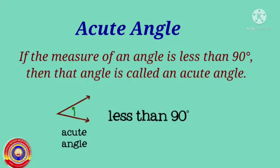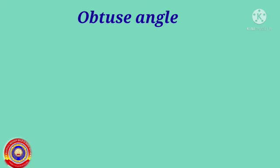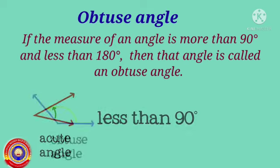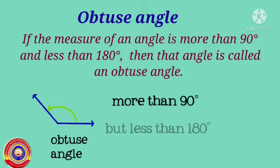Next, acute angle. If the measure of an angle is less than 90 degrees, then that angle is called an acute angle. Next, obtuse angle. If the measure of an angle is more than 90 degrees and less than 180 degrees, then that angle is called an obtuse angle.